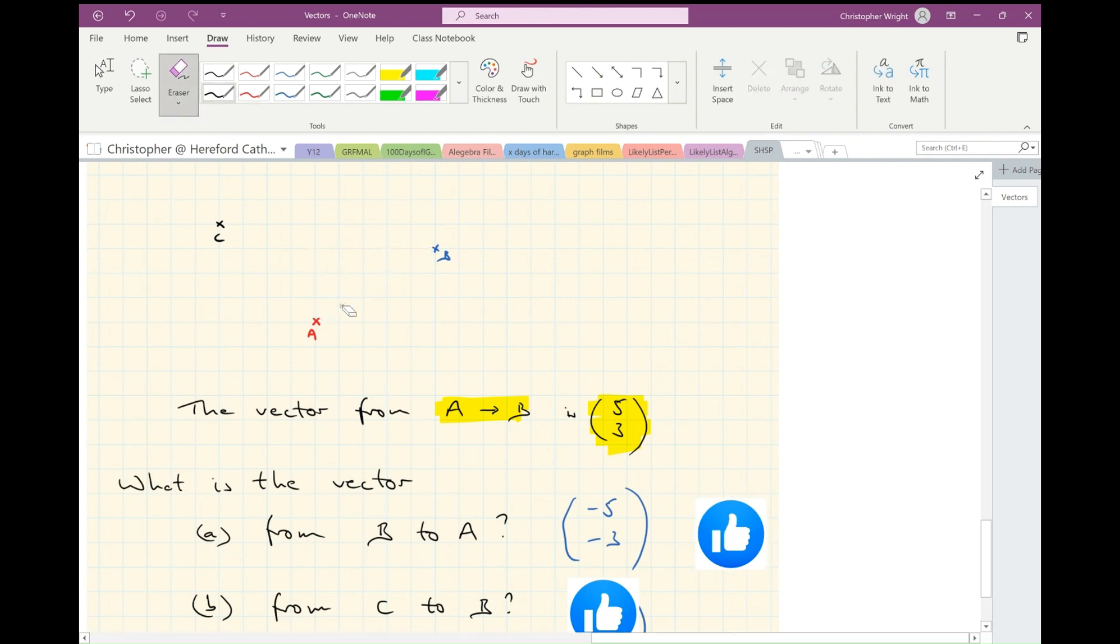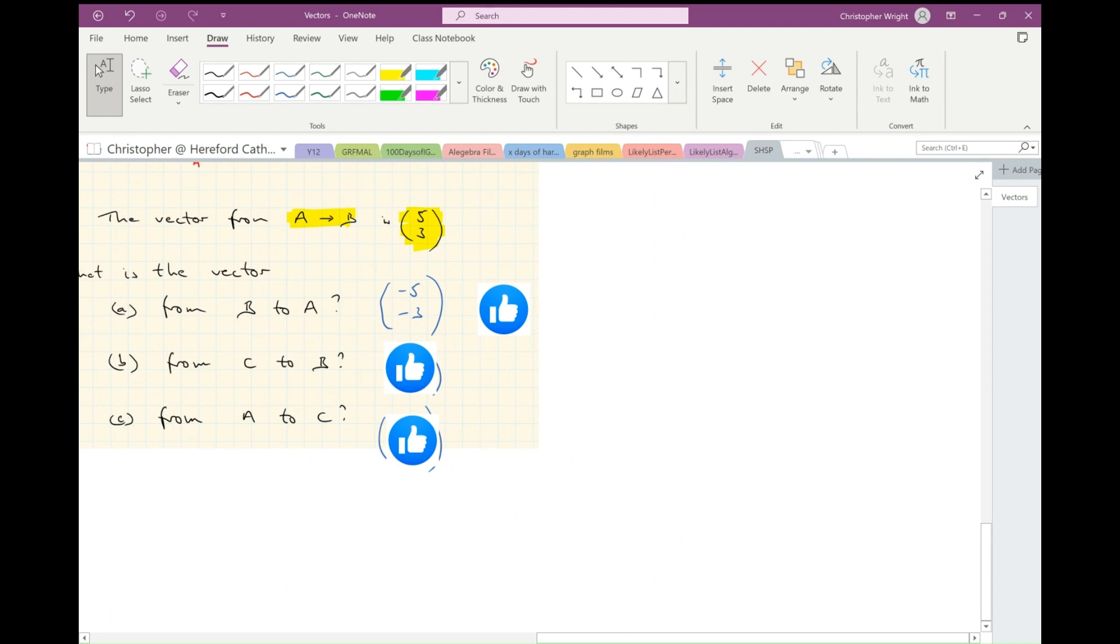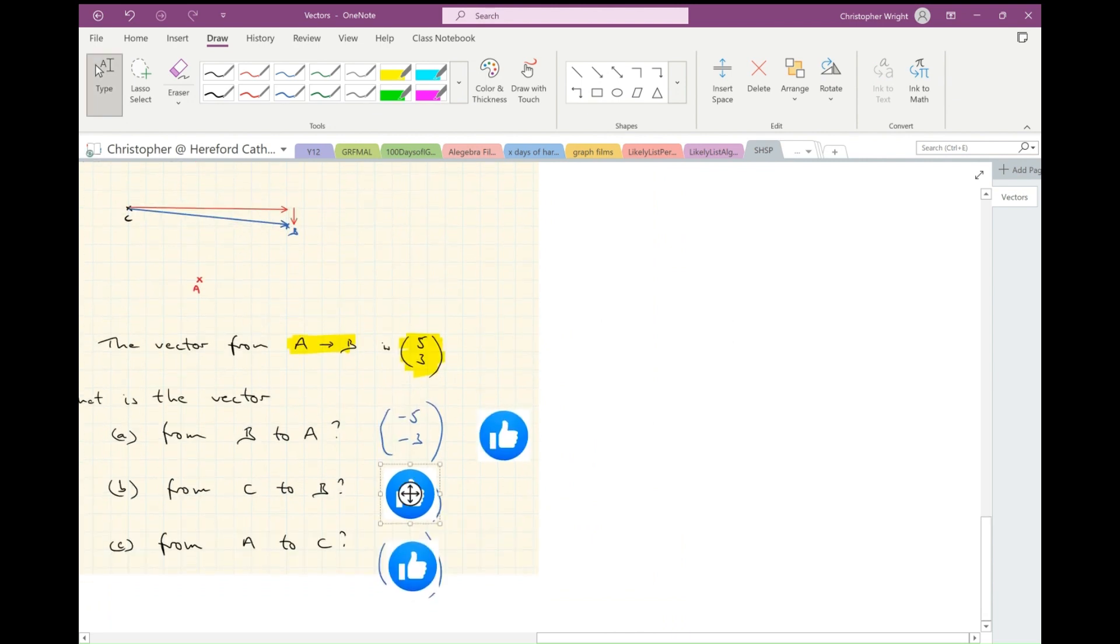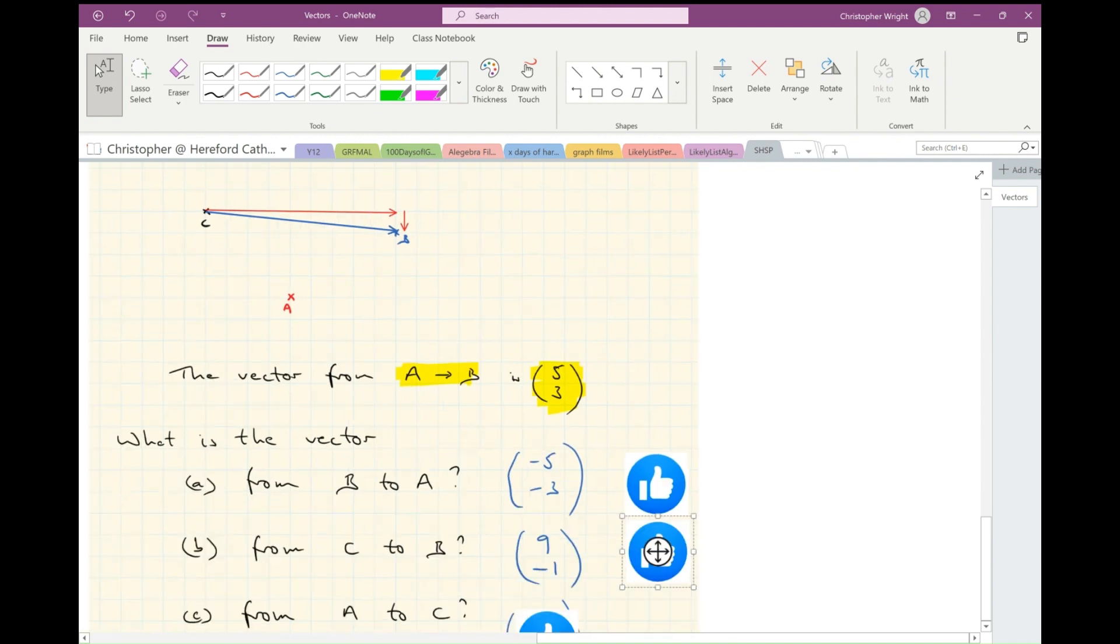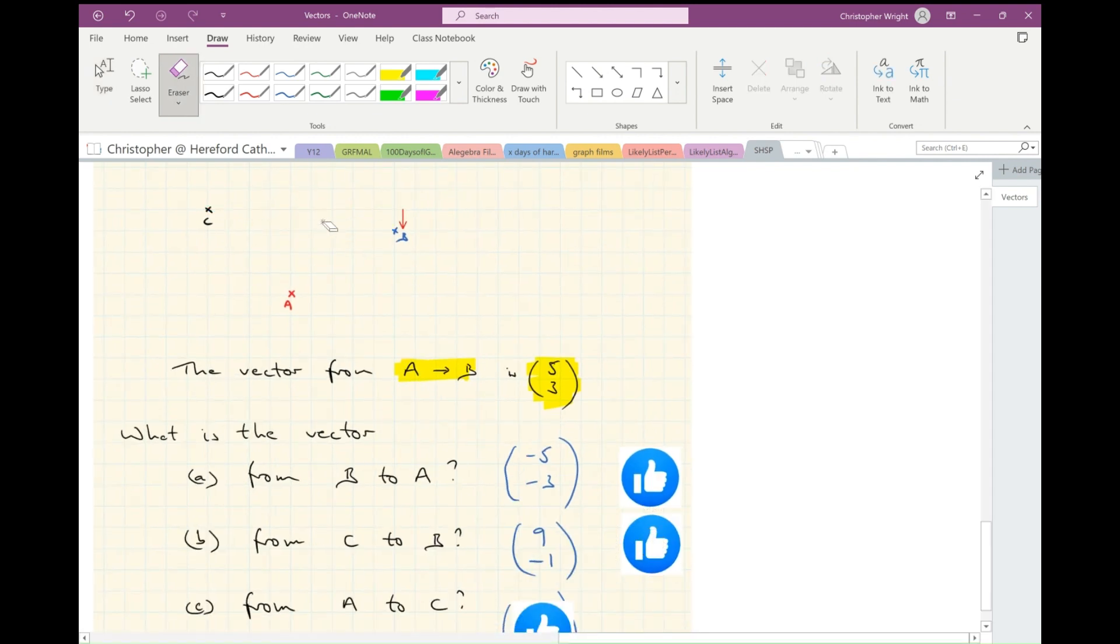What about from C to B? Start from C and make my way to B. In that case, my horizontal movement is going to be nine in a horizontally positive direction, and then one down. So my vector is (9, -1). Yes, we're correct.